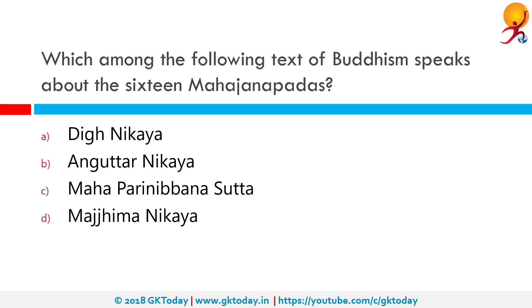Which among the following texts of Buddhism speaks about the 16 Mahajanapadas? The correct answer is Anguttara Nikaya, which literally means 'increased by one collection.'